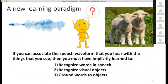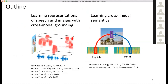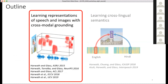The paradigm I'm going to talk about today is very different from conventional learning for speech recognition or machine translation. The core idea is: if we have a learning agent that can associate a speech waveform with what it sees, it must have implicitly learned to recognize words in speech, visual objects in images, and to ground the two modalities together. There are two parts to my talk: first the cross-modal grounding models we developed, and then an application using visual space as an interlingua to learn cross-lingual semantics — specifically between English and Hindi speech.